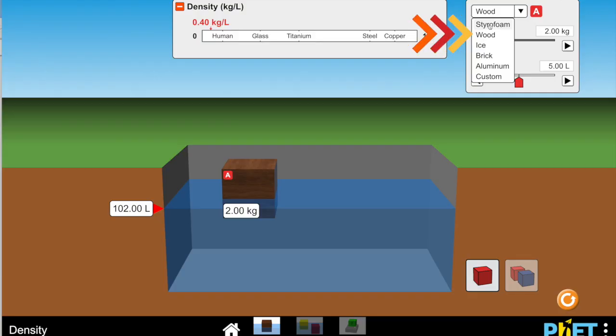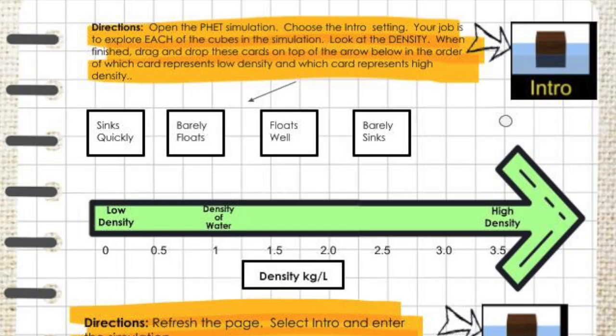Continue exploring all of these items until you've identified the density of items that sink quickly, barely float, float well, and barely sink.